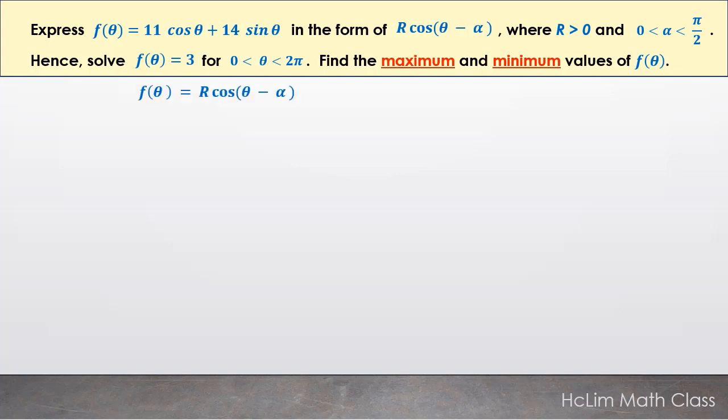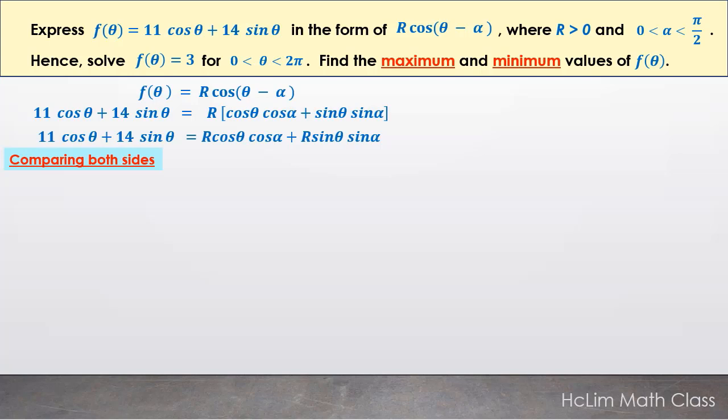So if we have f(θ), we are going to denote it as R cos(θ - α). We expand the compound angle cos(θ - α) to get R[cos θ cos α + sin θ sin α]. We expand it and we are comparing both sides with the coefficients.